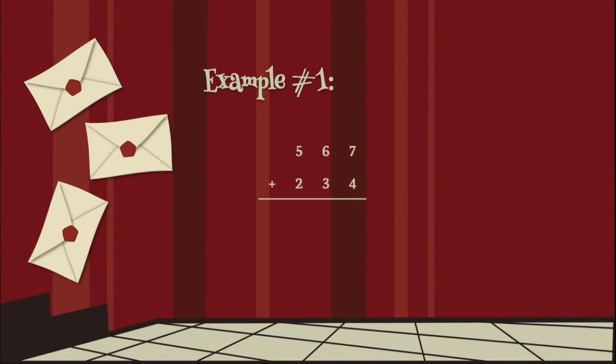Now, I have example number one here, 567 plus 234. What we're not going to do is we're not going to add the numbers and then round. We're going to round first. So now the question is, since both of these numbers have a ones place, a tens place, and a hundreds place, to which place are we going to round?